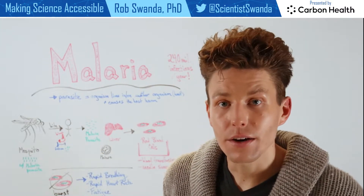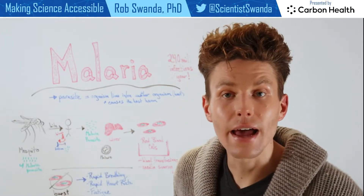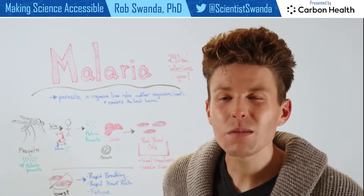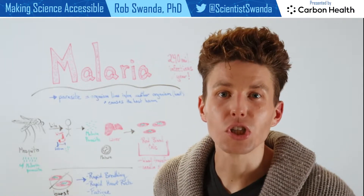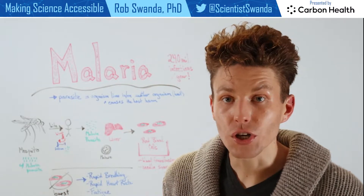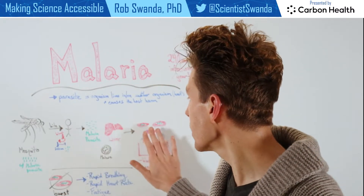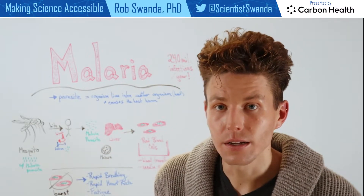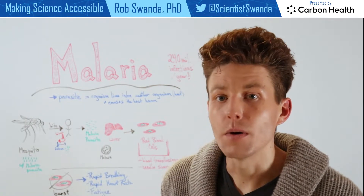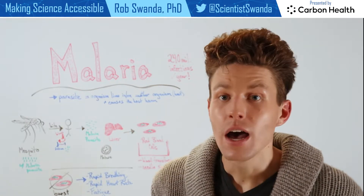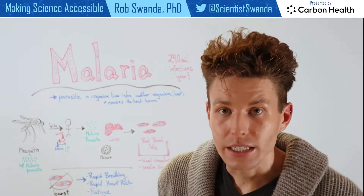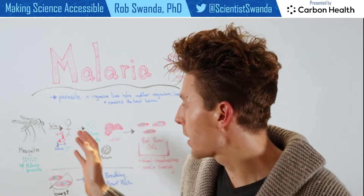Now that malaria parasite is inside that individual and it will move to the liver, where it will take some time to mature — and this can even be up to one year. Once mature, the malaria parasite will leave the liver and enter red blood cells. That's where an individual actually becomes the most infectious, because now if another mosquito comes along and takes up some of their blood, they'll be infected with the malaria parasite.